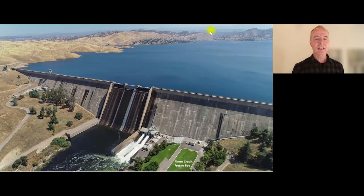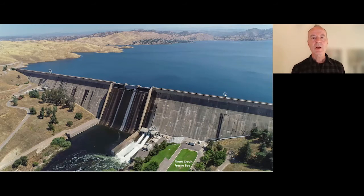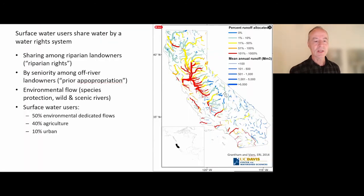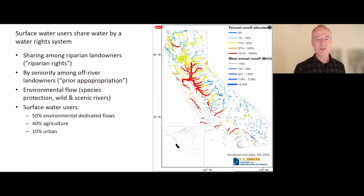Practically every canyon outlet from these mountain ranges is blocked by a dam, behind which we have reservoirs where we store much of the winter and spring runoff. That water is then distributed through canals to water users in California. Here's another picture of smaller reservoirs in Northern California, many of which are used for recreational uses, not just for storage.